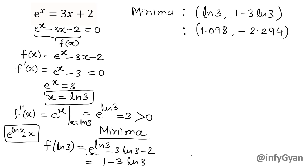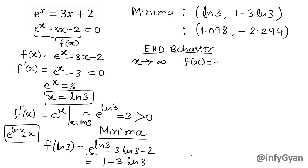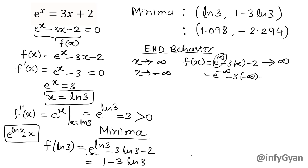Now let us check the end behavior of this function. When x tends to infinity, f(x) becomes e raised to the power infinity minus 3 times infinity minus 2 — ultimately e raised to the power infinity, so the value tends to infinity. When x tends to minus infinity, the value will be e raised to the power minus infinity minus 3 times minus infinity minus 2 — the first term tends to 0 and the second term gives infinity. So summing up, we have one minima only and then both sides the function is rising up.